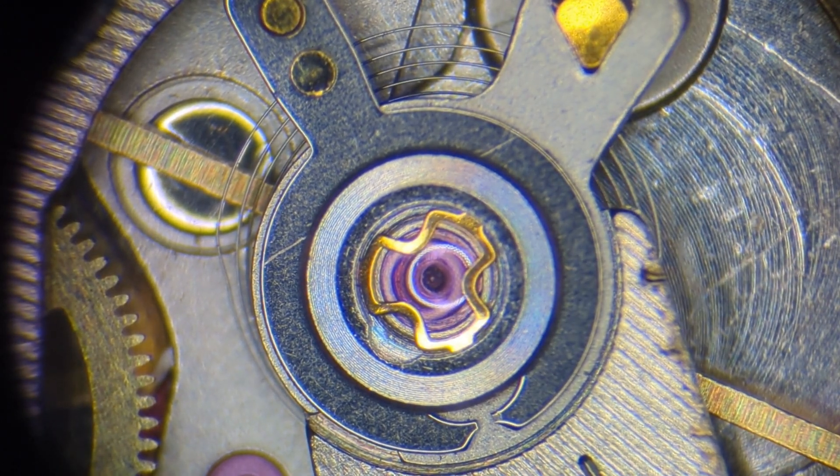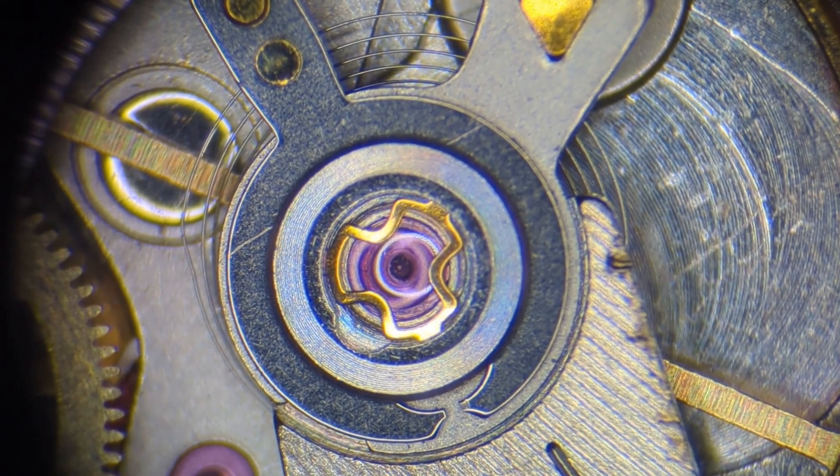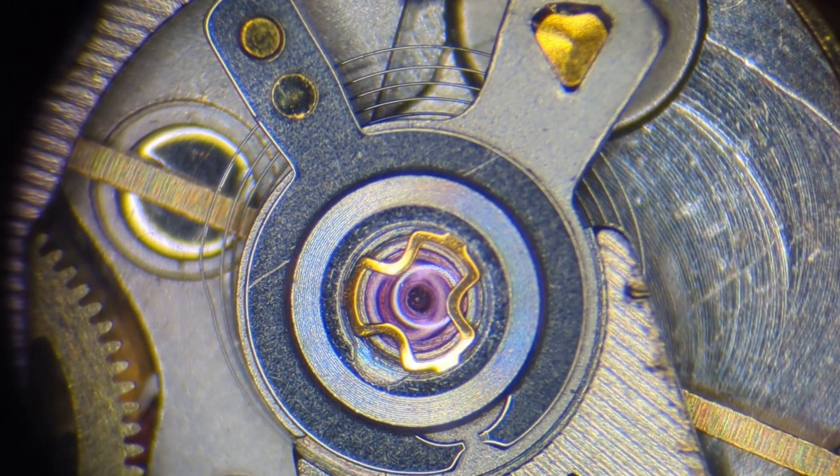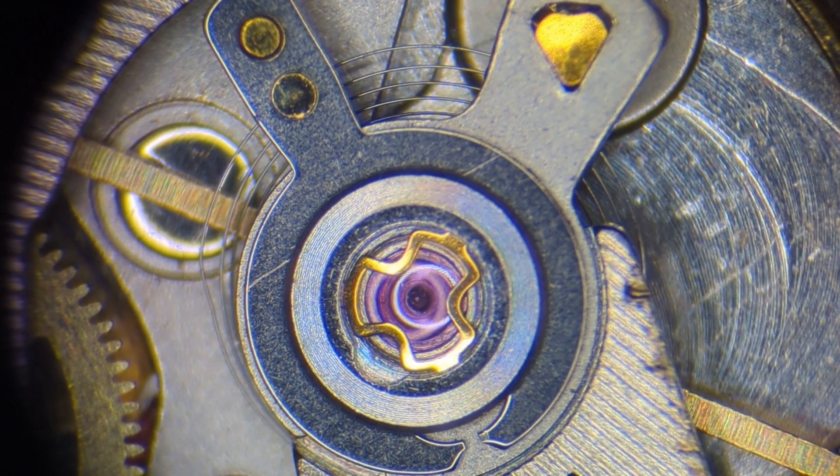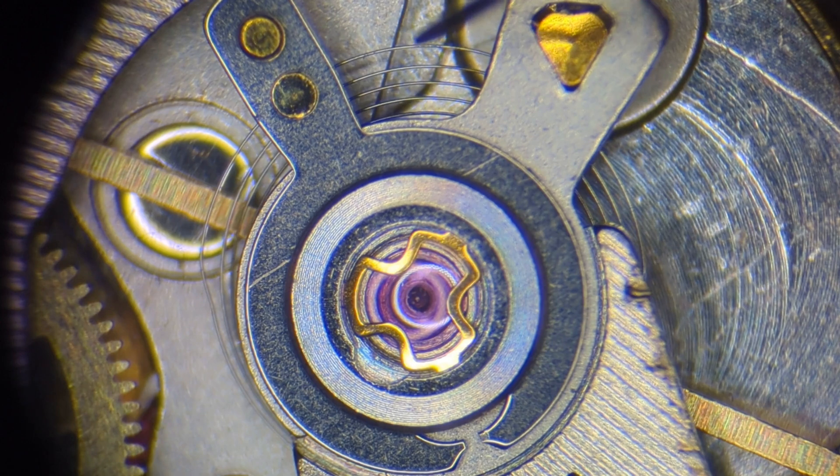But for some cases this method works. As we can see, this hairspring has no concentric coils. There are more coils visible on one side than on the opposite side, and distances between coils are not equal.